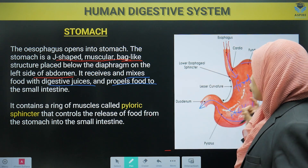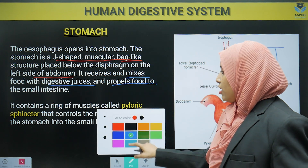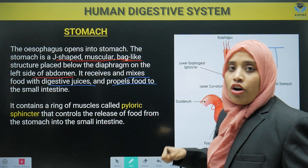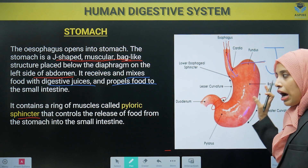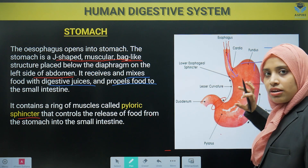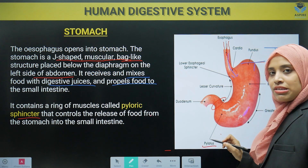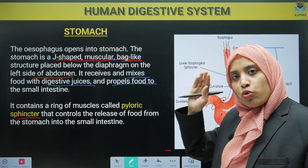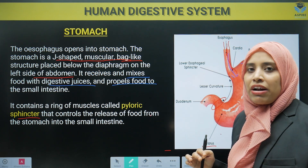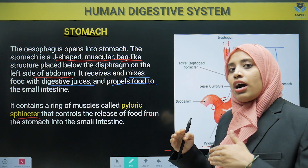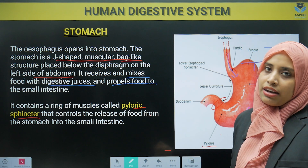The stomach contains ring-like muscles called the pyloric sphincter. There is a ring-like structure known as the pyloric sphincter, and this sphincter controls the release of food forward into the intestine, making sure food does not go back into the stomach after entering the intestine. So the pyloric sphincter controls the release of food into the small intestine.